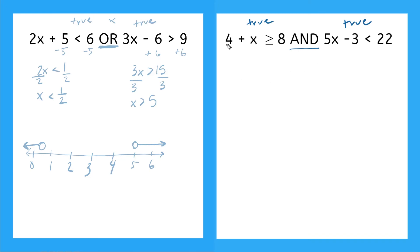So now I need to solve for X. Let's start with this one over here. To get X by itself, I need to subtract 4 from both sides. And that will give me X is greater than or equal to 8 minus 4 is 4. That was easy. Okay, let's come over to this one. To get X by itself, first thing first, I'm going to add 3 to both sides. So this will give me 5X is less than 25.